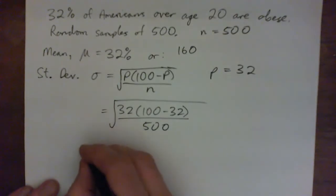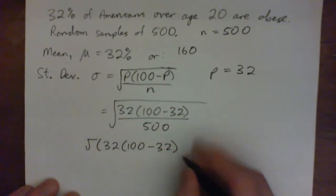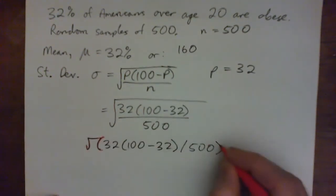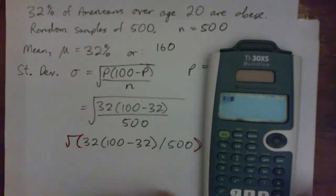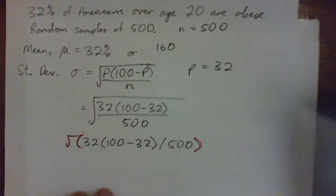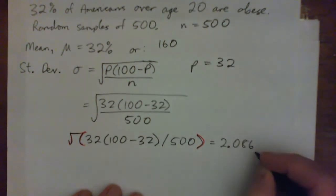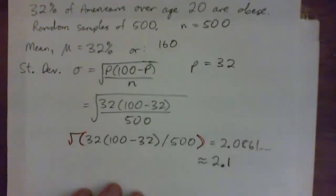So in my calculator, I'm going to go square root, parenthesis 32, parenthesis 100 minus 32, parenthesis over 500, and then close the parenthesis for that square root. 32 times 100 minus 32 over 500. We get 2.086 and so on. And it says round that to the nearest tenth, so 2.1.